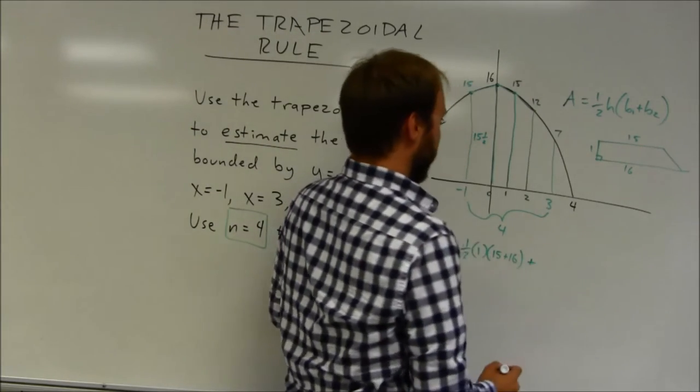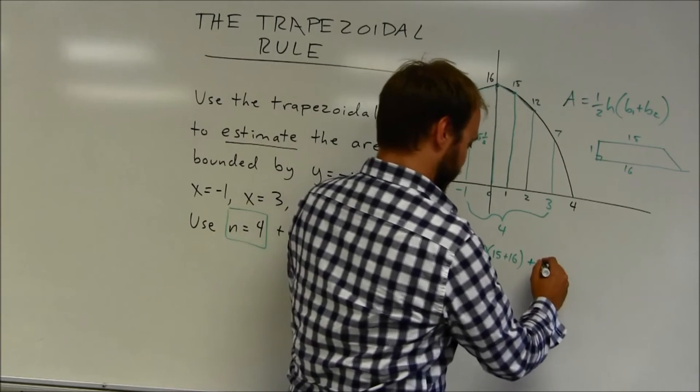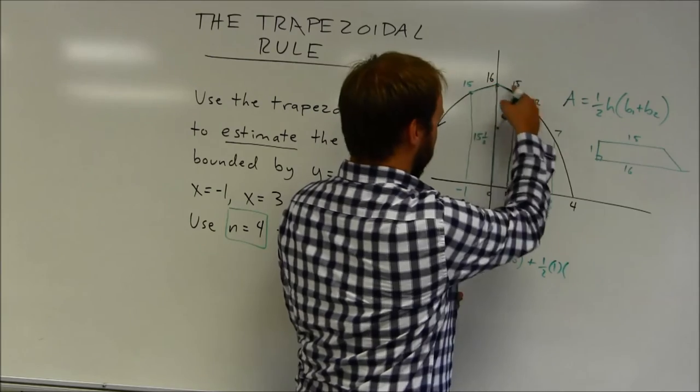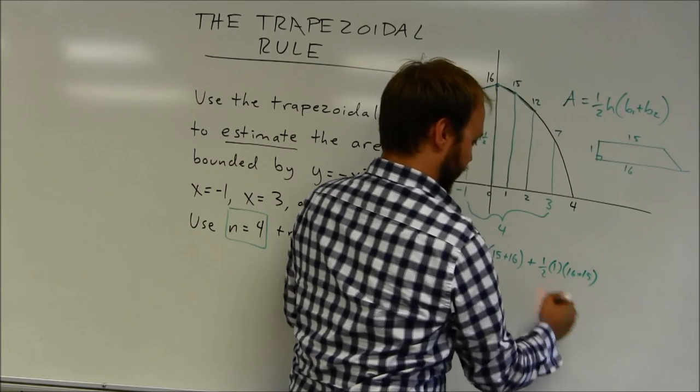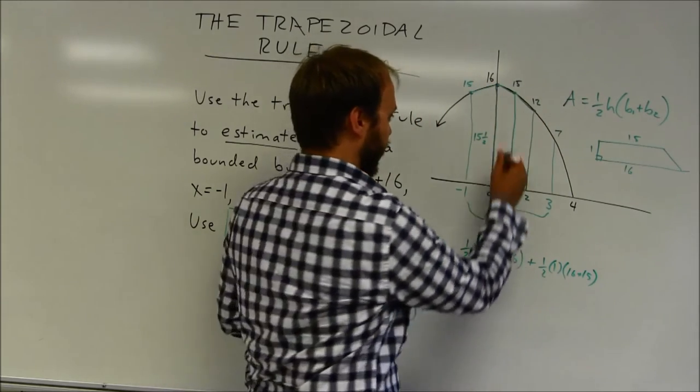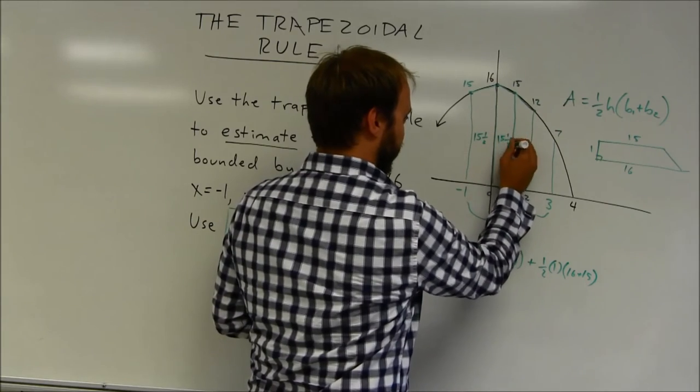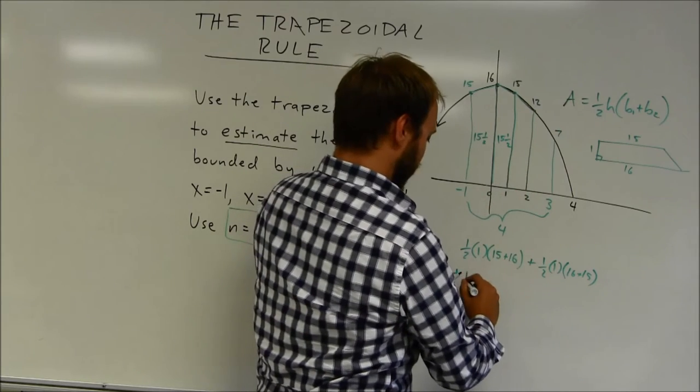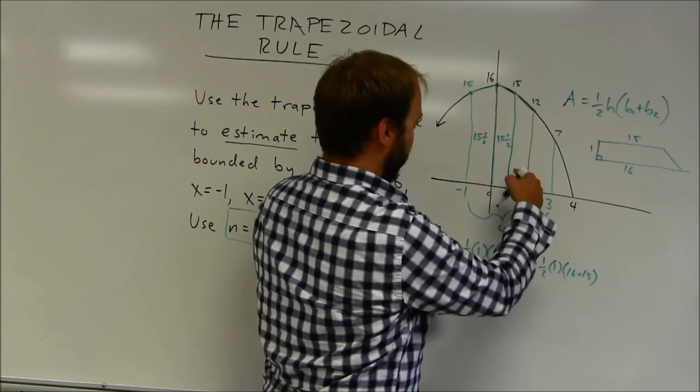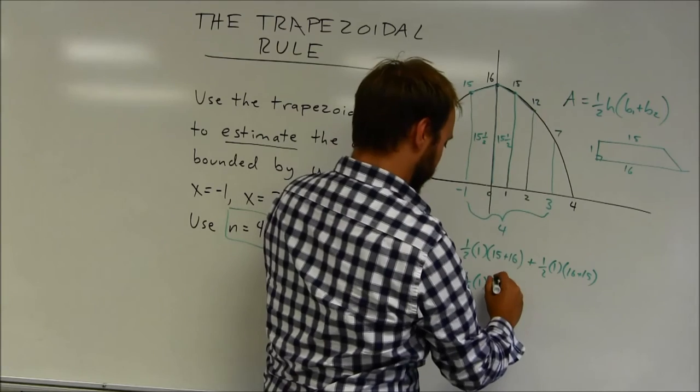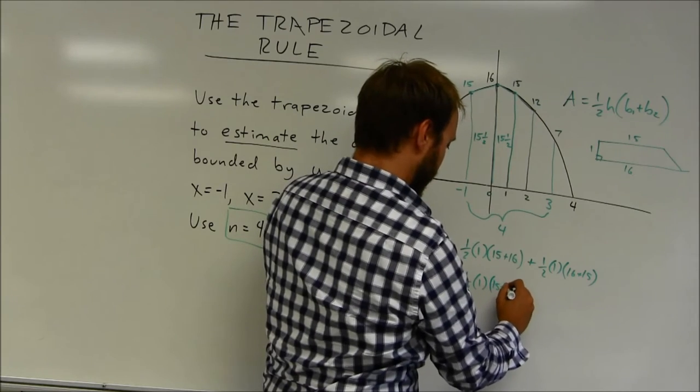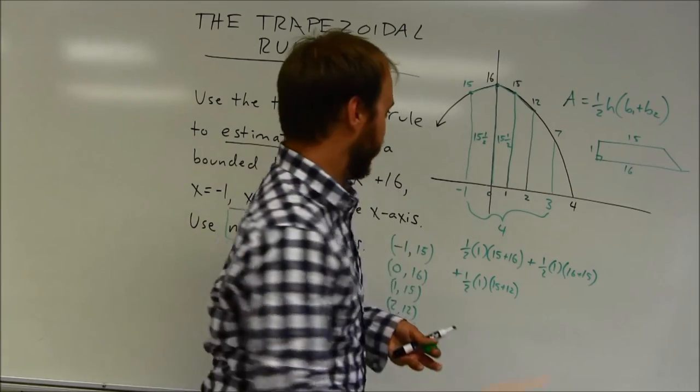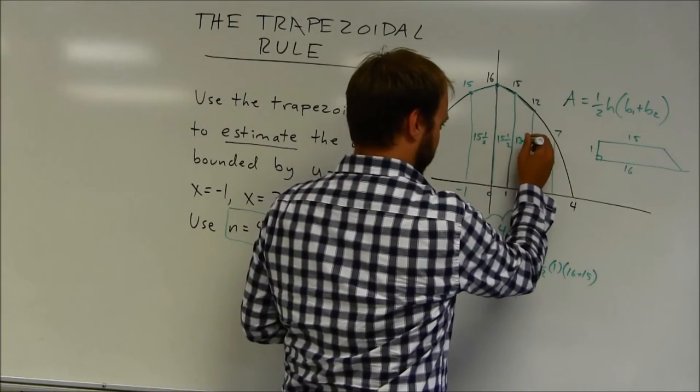I'm going to do my second trapezoid. My second trapezoid actually has the same dimensions. It's one half the height, height is 1, times the sum of the bases, 16 plus 15. And again, that's going to be one half of 31, which is 15 and a half. Continuing with this, it's going to be half the height of 1, times the sum of the bases. That's 15 and 12. 15 and 12 add up to be 27. Half of 27 is 13 and a half.